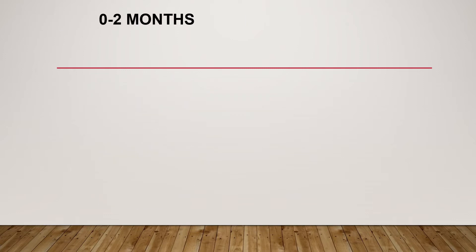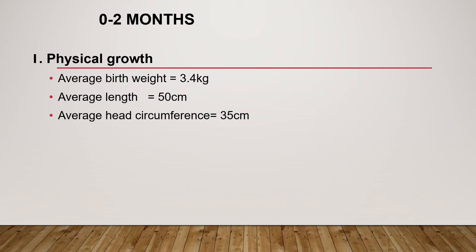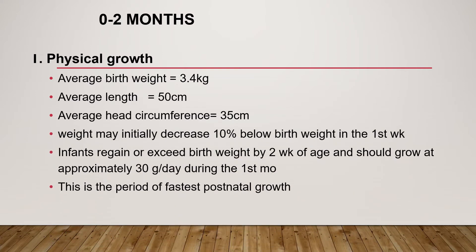Looking at growth and development from zero to two months of age: at birth, the average birth weight is around 3.25 to 3.5 kg, average length is around 50 centimeters, and average head circumference is 35 centimeters. Weight may initially decrease 10 percent below birth weight during the first week due to increased excretion of extracellular fluid. Infants regain or exceed birth weight by two weeks of age and should grow at approximately 30 grams per day during the first month — the period of fastest postnatal growth.